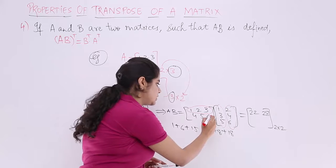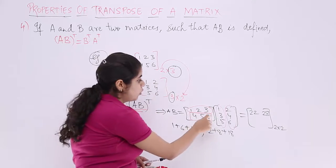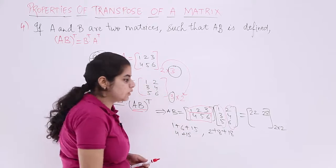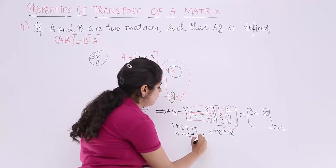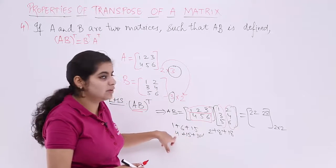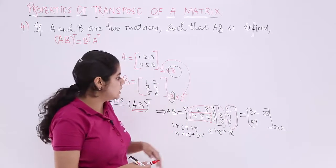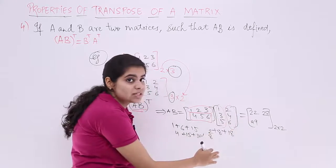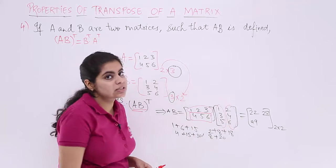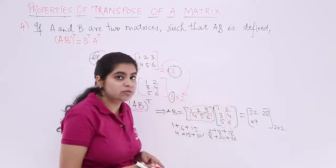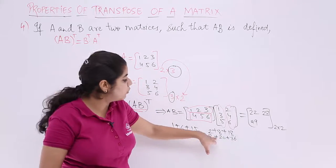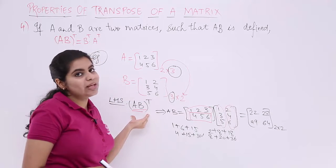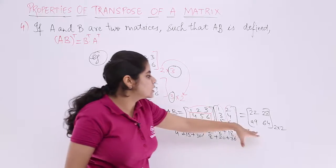The element at row 2, column 1 is: 4×1 + 5×3 + 6×5 = 4 + 15 + 30 = 49. The element at row 2, column 2 is: 4×2 + 5×4 + 6×6 = 8 + 20 + 36 = 64. So AB = [22, 28; 49, 64]. Now the transpose of AB has not been computed yet. The transpose interchanges rows and columns, giving AB whole transpose = [22, 49; 28, 64]. The LHS is now done.